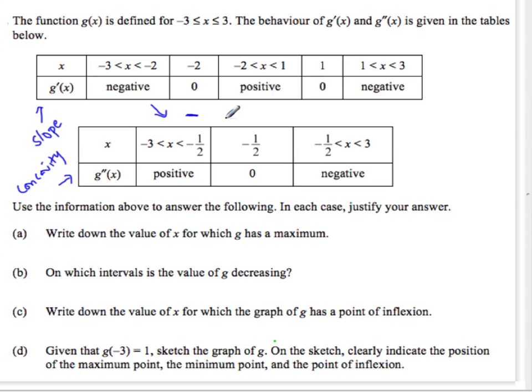And then from negative 2 to 1, it's positive, which means the function is going up. And then it's 0 again. And then it goes down, the negative part.